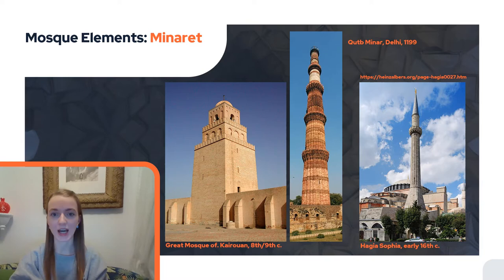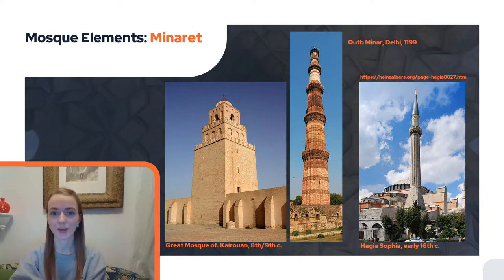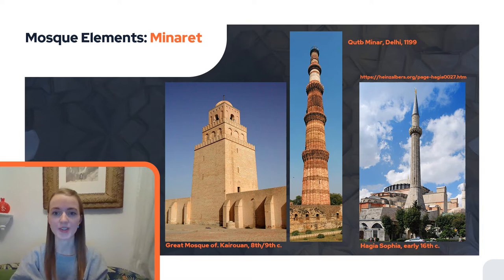The minaret is usually a tower from which the muezzin proclaims the call to worship five times a day. The Mosque of Kairouan from the 8th or 9th century has one of the oldest surviving minarets — a tower 35 meters high whose base still dates to the early 9th century. This architecture may go back to the model of ancient lighthouses; in the landscape it set a clear accent as a sign of Islamic presence. In the middle you can see the Qutb Minar from 1199, a minaret and so-called victory tower over 72 meters tall. The one on the right is from the Hagia Sophia, added in the early 16th century.